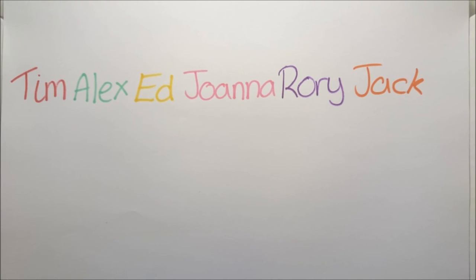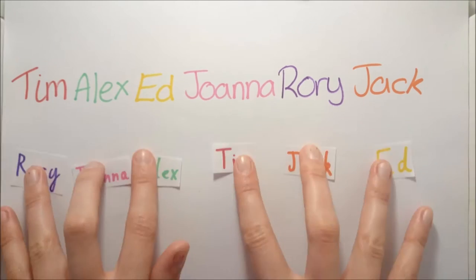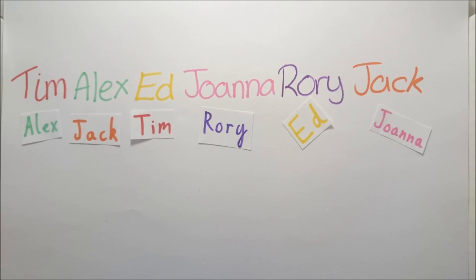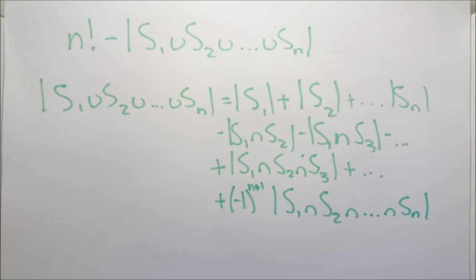Say we listed our names like this. We are looking for the sets which are rearranged such that none of the names are in their original position like this or this or this or even this. This would be the total number of ways for people to draw their names i.e. n factorial minus the size of the union of all sets which have at least one person drawing themselves which just leaves the sets where no one draws themselves. Now this union can be found via the inclusion exclusion principle.